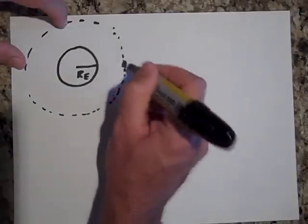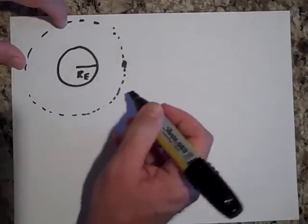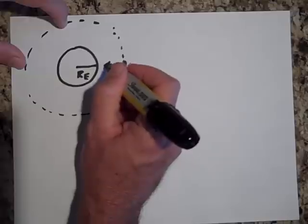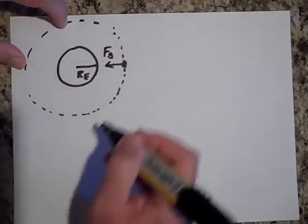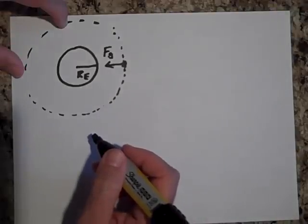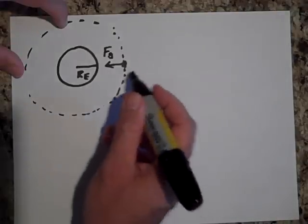Again, if you draw the force diagram of the satellite, the force diagram looks like this. There's just one force on it. It's the force of gravity. There aren't any other forces on this.